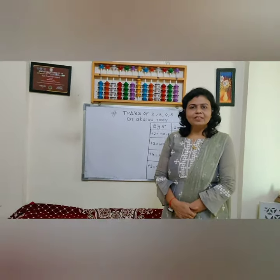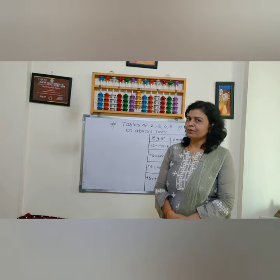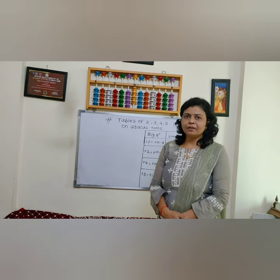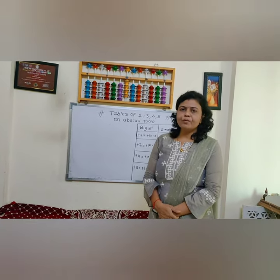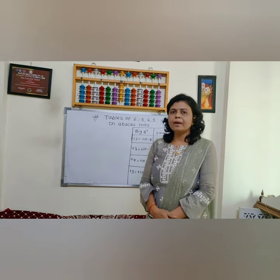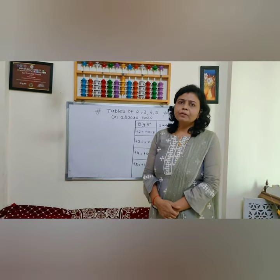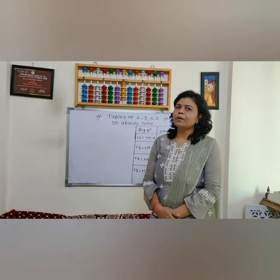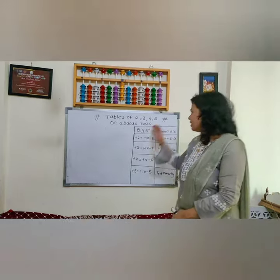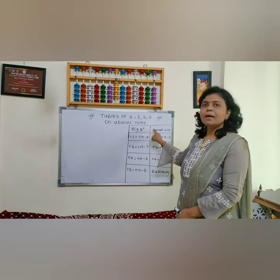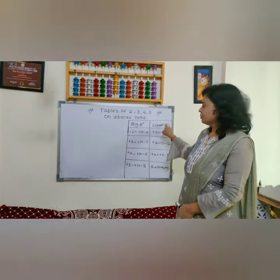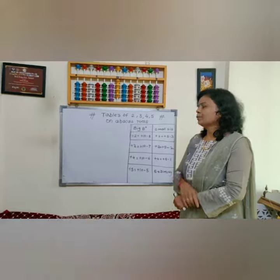Hello everyone, this is Varsha Bosley and welcome to Achiever Activity Hub. Today I am going to show the table of 2, 3, 4, 5 on the abacus. When we do our tables on the abacus, we need a sum formula. We need the big B plus formula and the small C plus formula. So let's start.